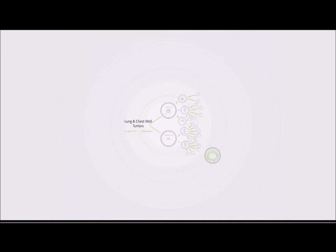Today's topic is lung and chest wall tumors. Chest wall tumors can be classified by the tissue of origin, such as bone, cartilage, soft tissue, and vascular tissues. They can also be classified according to whether they're benign or malignant.